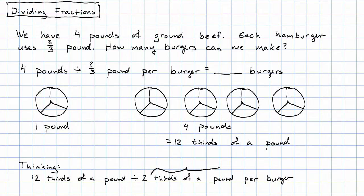Right now, I'm thinking of third of a pound as my noun instead of pound. Twelve thirds of a pound divided by two thirds of a pound per burger. Well, twelve divided by two, that's just six burgers.